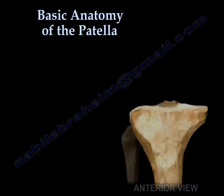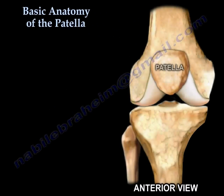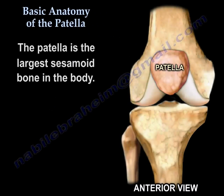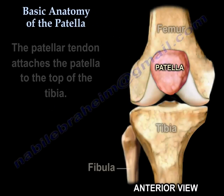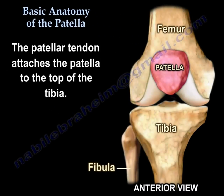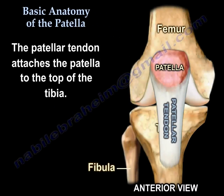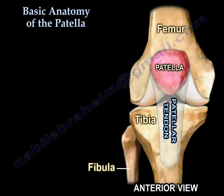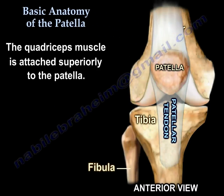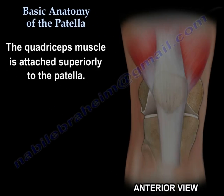Anatomy of the Patella. The patella is the largest sesamoid bone in the body. The patellar tendon attaches the patella to the top of the tibia. The quadriceps muscle is attached superiorly to the patella.